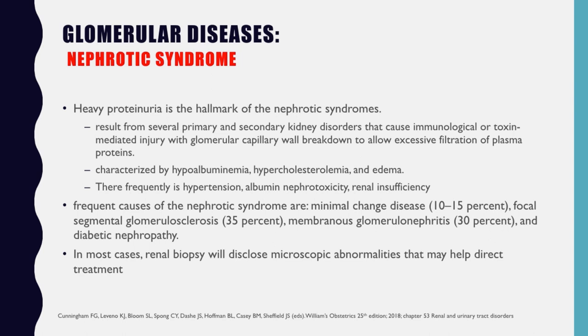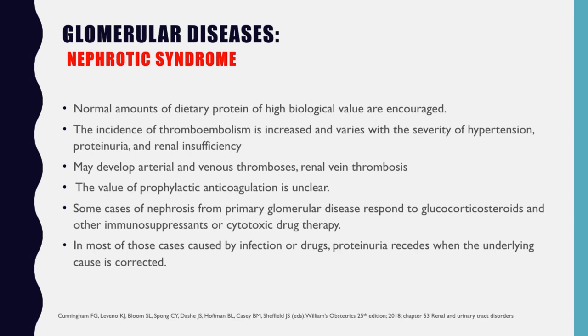Next we discuss nephrotic syndrome, which is characterized by heavy proteinuria — the hallmark of the condition. It results from several primary and secondary kidney disorders causing immunological or toxin-mediated injury with glomerular capillary wall breakdown allowing excessive filtration of plasma proteins, leading to hypoalbuminemia, hypercholesterolemia, and edema. Frequent causes include minimal change disease, focal segmental glomerulosclerosis, membranous glomerulonephritis, and diabetic nephropathy. In most cases, renal biopsy will disclose microscopic abnormalities that may help direct treatment.